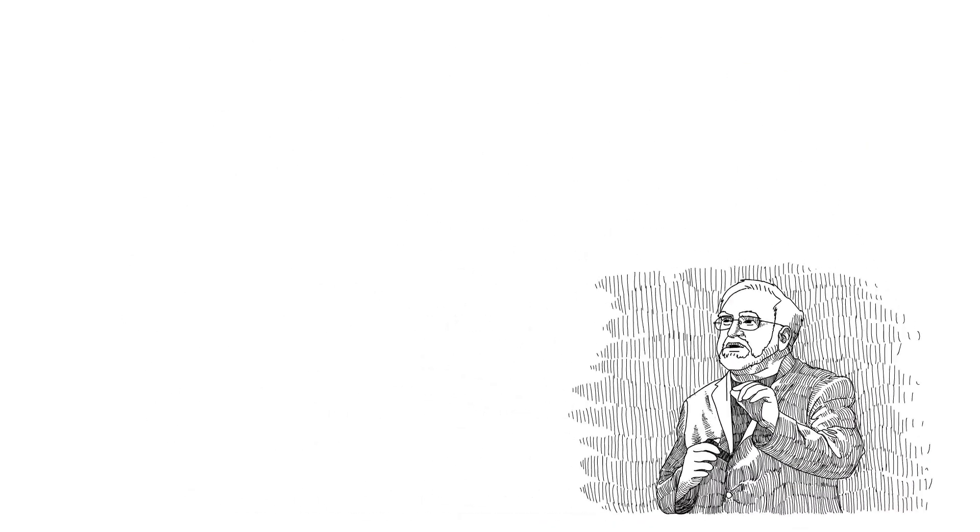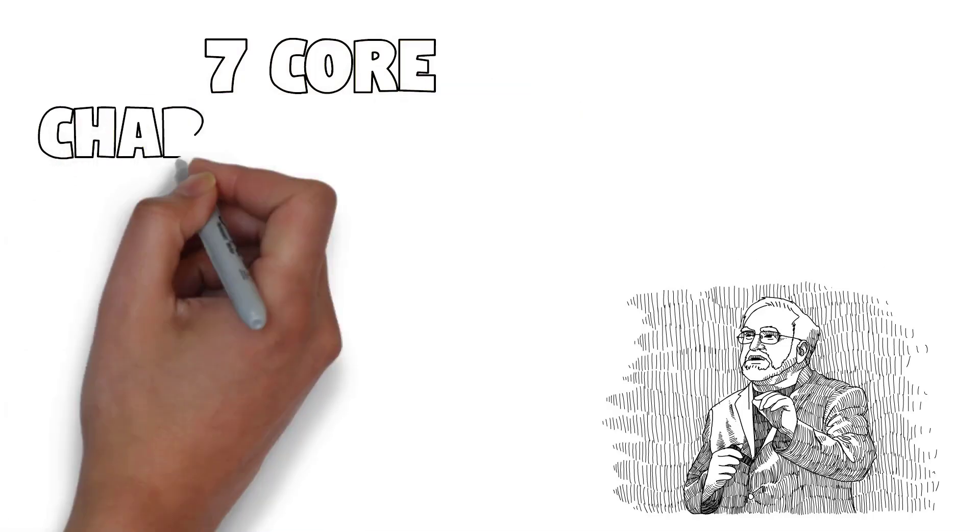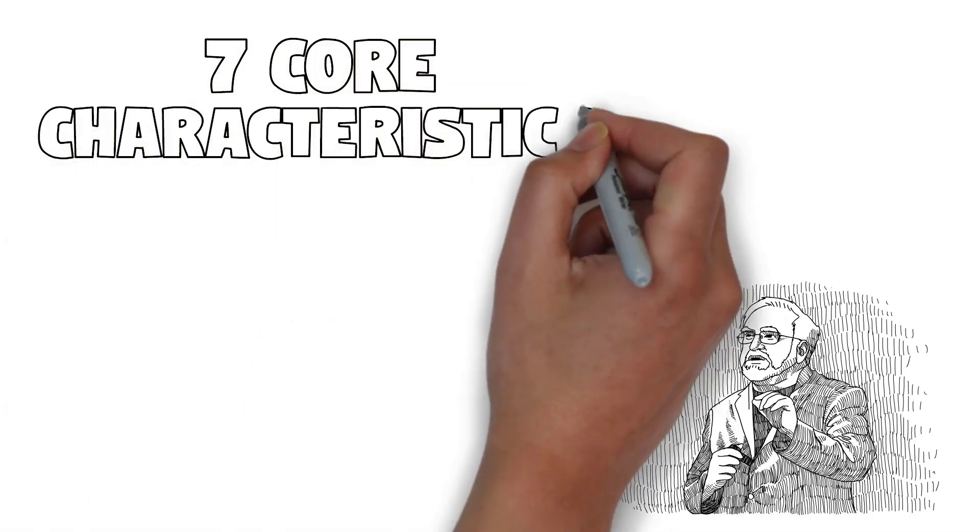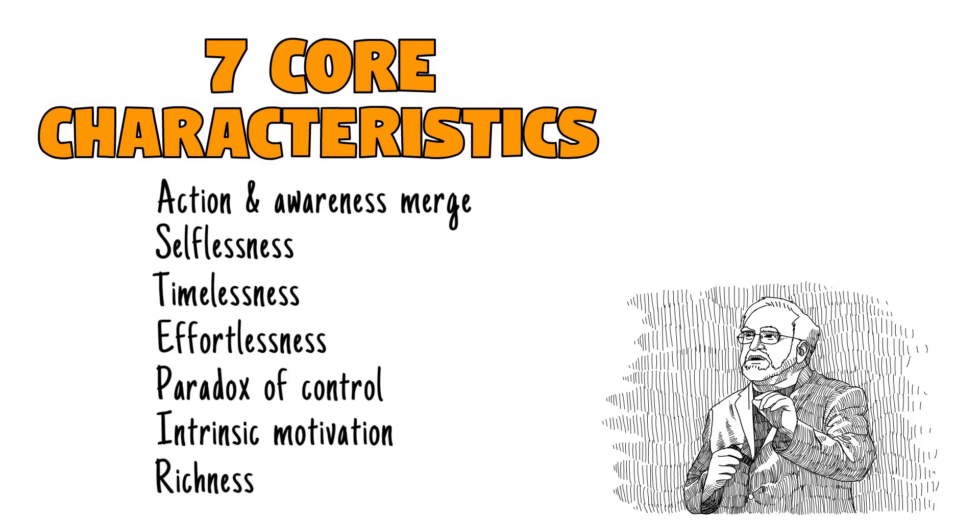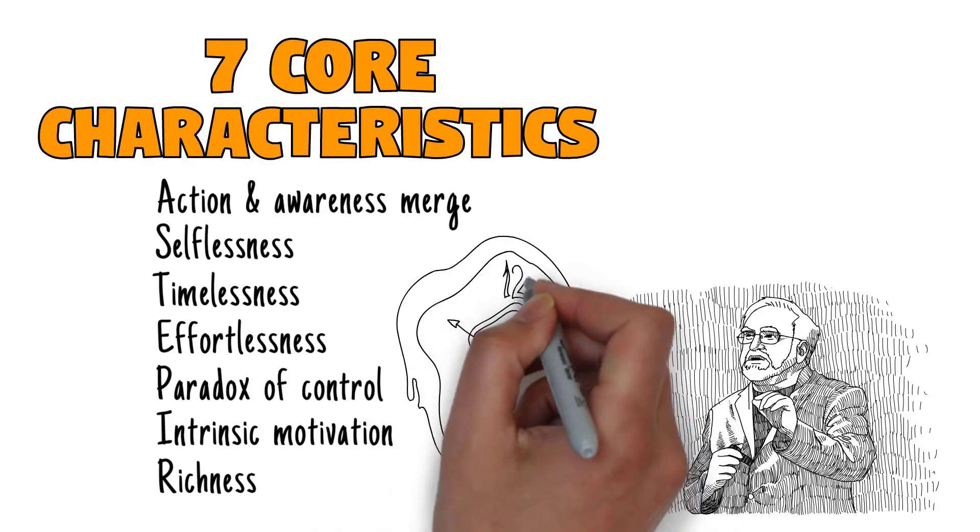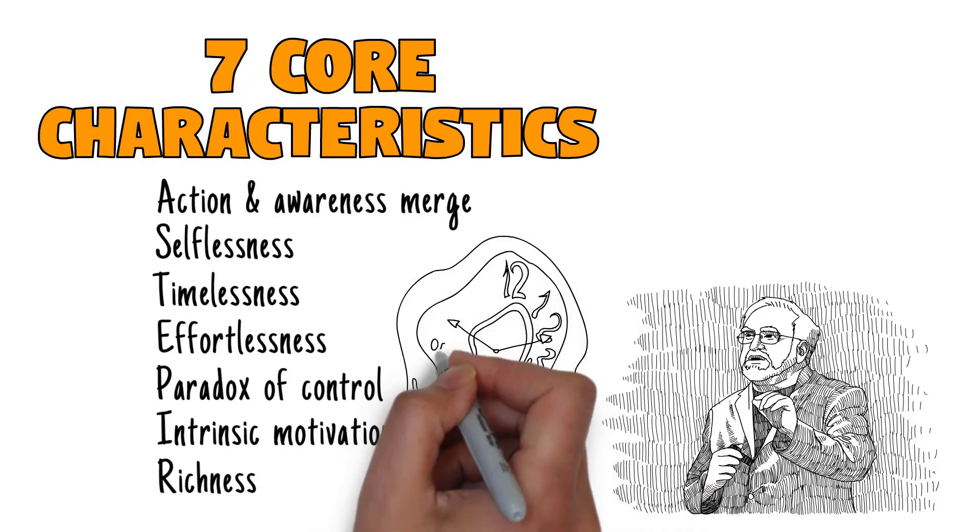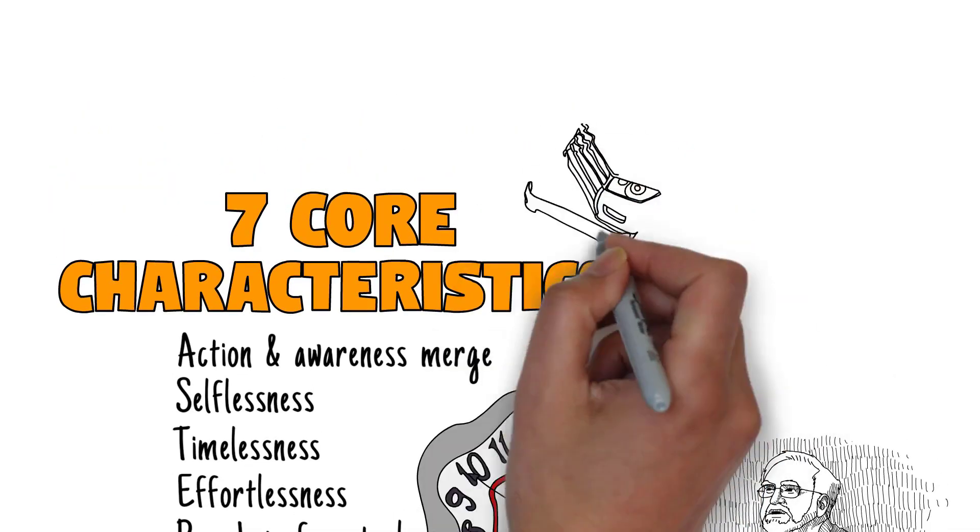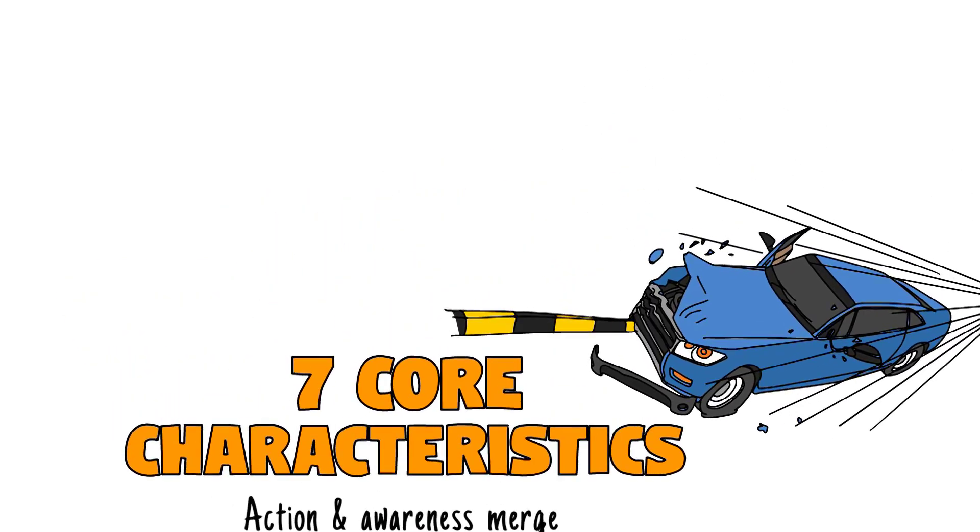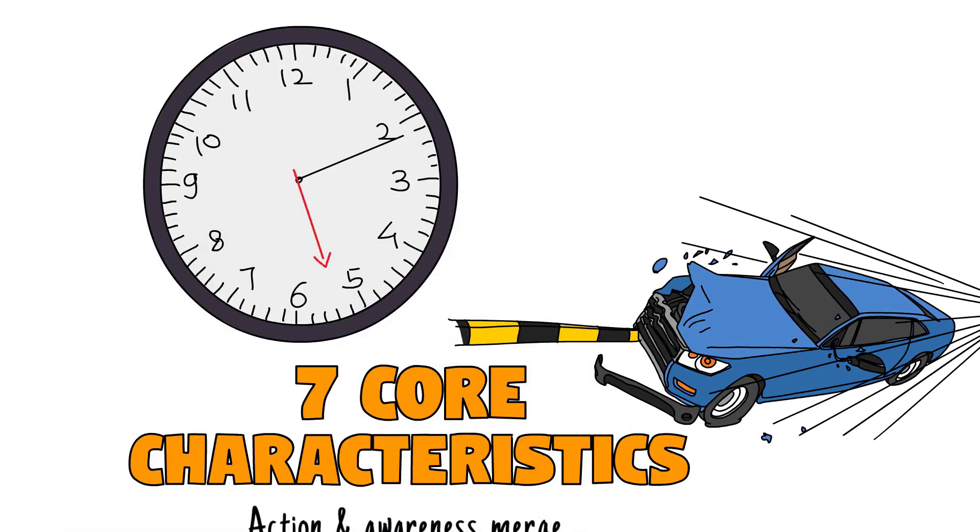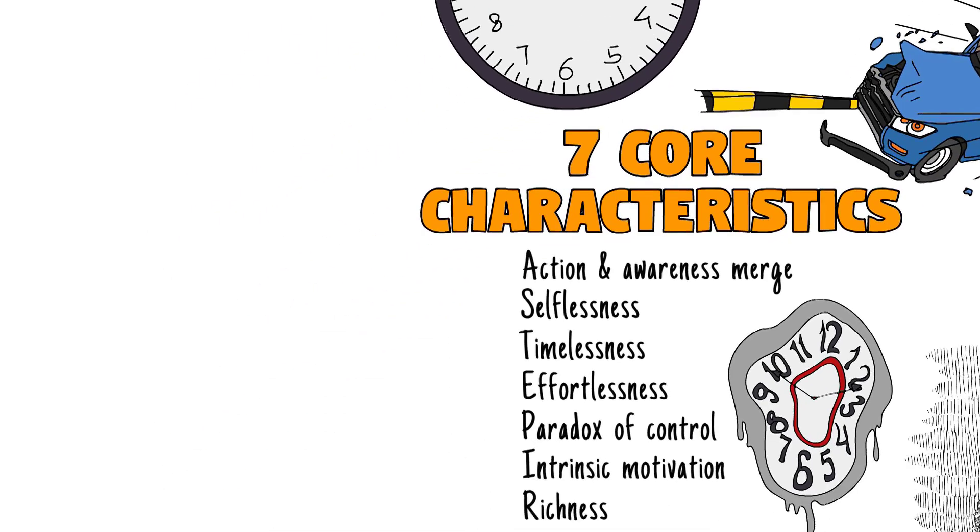This is Mihaly Csikszentmihalyi, often called the godfather of flow psychology. The first thing he discovered is that flow is definable. It has seven core characteristics: action and awareness merge, your sense of self vanishes, time dilates—sometimes it'll slow down and you get that freeze-frame effect, and more frequently it speeds up so five hours go by in like five minutes. Throughout, all aspects of performance, both mental and physical, go through the roof.